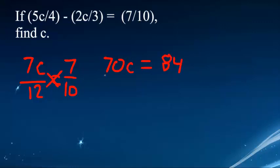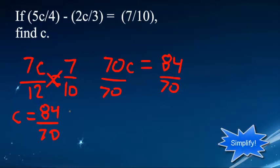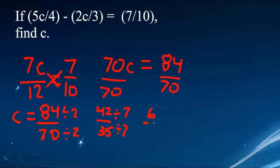Now you get c by itself — you divide by 70. So you end up with c equals 84 over 70. Then you want to simplify, so you divide 84 and 70 both by 2, giving 42 over 35. You simplify further by dividing by 7, so you end up with 6 over 5.